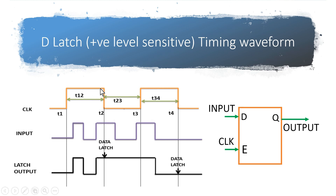Now a very important thing: when there is a level transition from 1 to 0, this edge is called the latching edge of the clock. Whatever value of input is available at this edge is going to be retained at the output irrespective of the input value during logic low. Similarly, when the clock goes high again, whatever input is available will be passed to the latch output, and again on the latching edge it is going to retain its previous value.